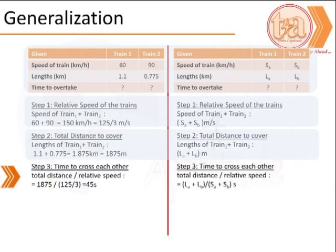We know the distance covered, we know the relative speed and we use this to calculate the time that the trains take to cross each other.